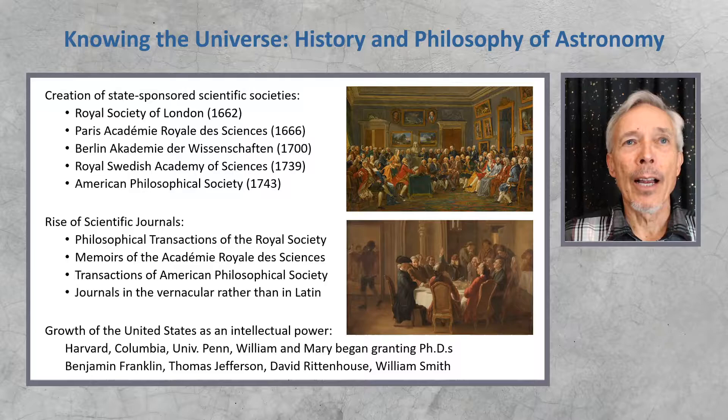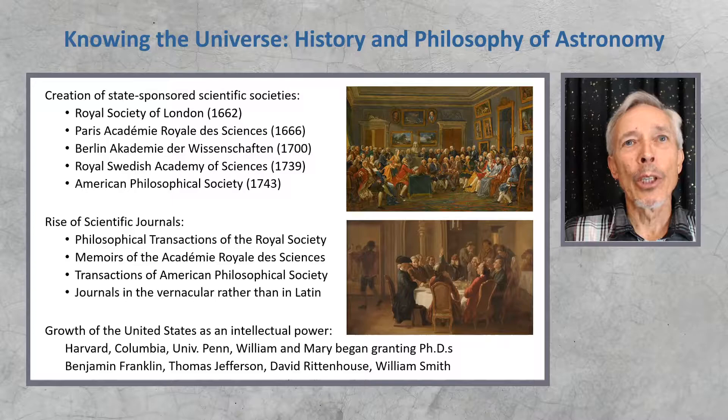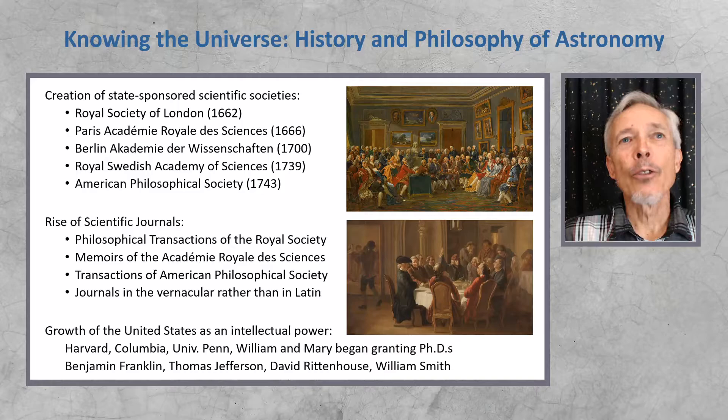We see the creation of state-sponsored scientific societies. The Royal Society in London was the first, followed soon after by an equivalent organization founded in Paris, and then a while after that in Berlin. By the end of the 18th century, these societies existed throughout Europe.